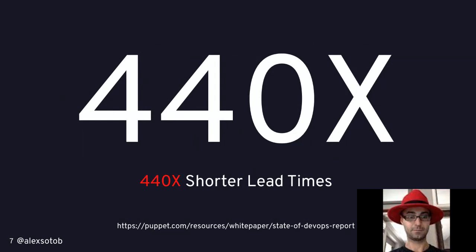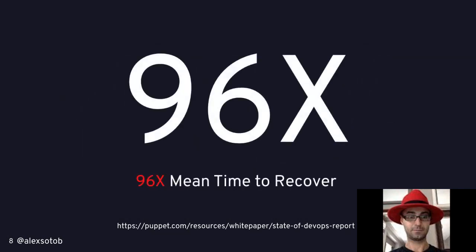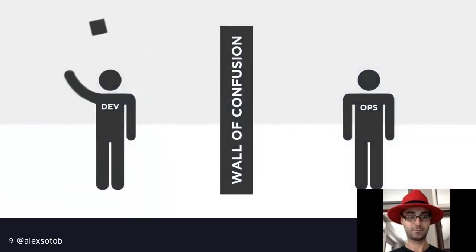Lead time is measured from when you have an idea to when it's available for your customer - the process of thinking, designing, developing, testing, and finally deploying and releasing. If you have shorter lead times, you release ideas faster than your competitors. And of course errors happen - that's natural - but if you embrace DevOps, your time to recover is going to be 96 times faster.